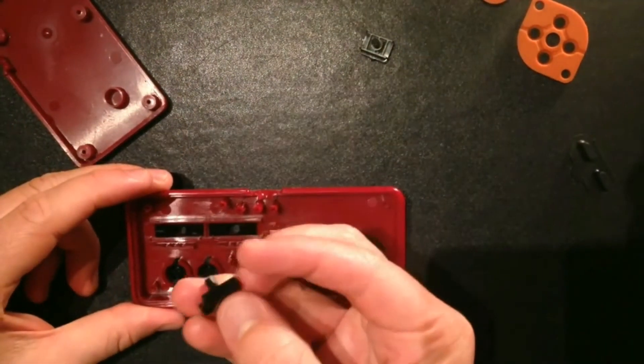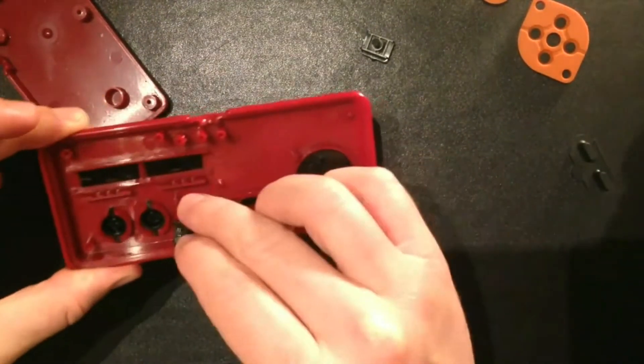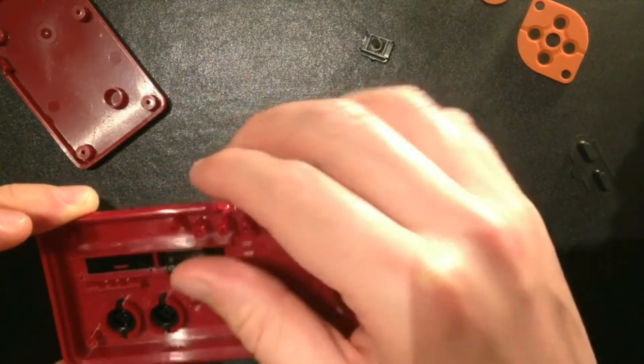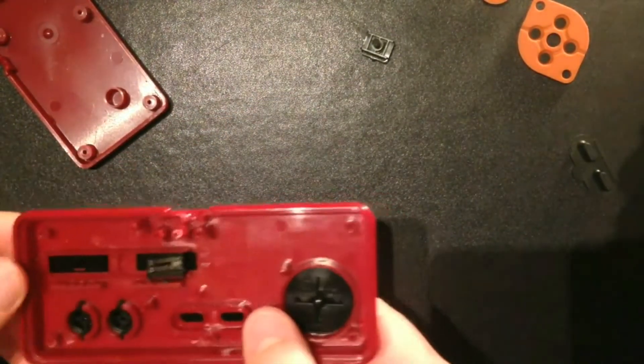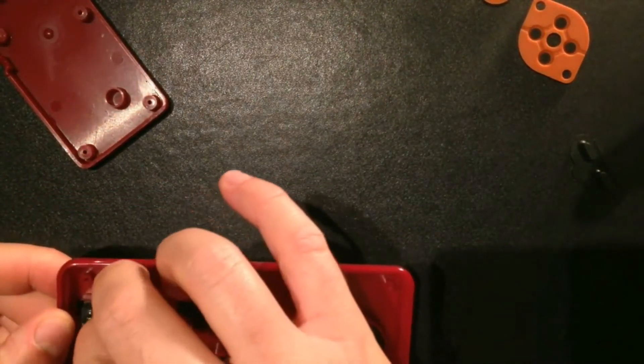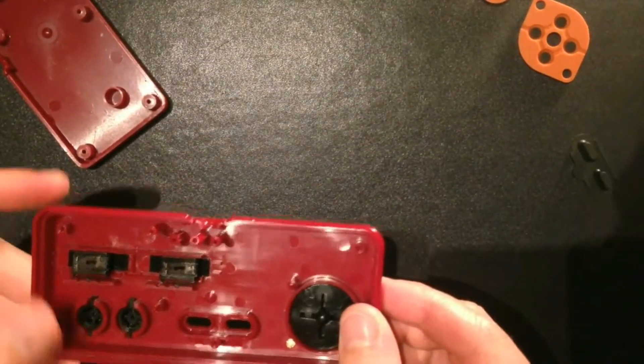These panels I think go in first, and then our turbo switches go in. I'm trying to figure out which way they go in. There's a little notch on the bottom and that fits into these grooves, so I'm assuming they just fit in like that. One there and one there.